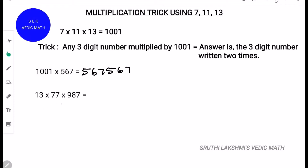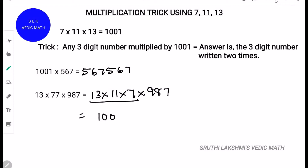Let's try another example: 13 into 77 into 987. This can also be written as 13 into 11 into 7, since 77 is 11 into 7. So, 13 into 11 into 7 into 987 equals 1001 into 987. Remember, multiplying any 3-digit number by 1001 means you write the 3-digit number 2 times. So, 1001 into 987 is 987,987.